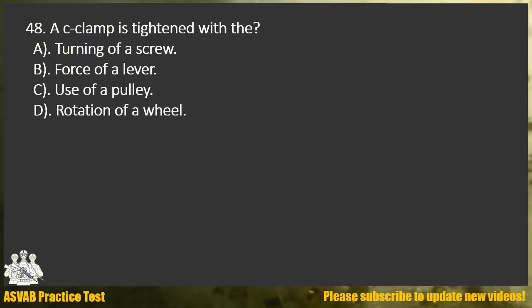Question 48. A C-clamp is tightened with: A. Turning of a screw. B. Force of a lever. C. Use of a pulley. D. Rotation of a wheel.